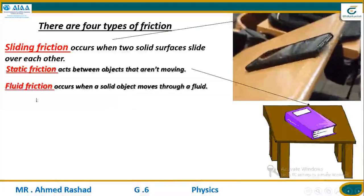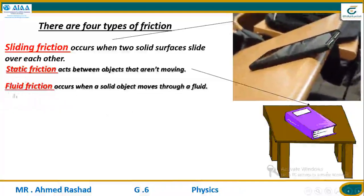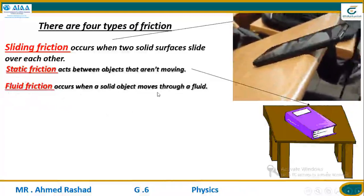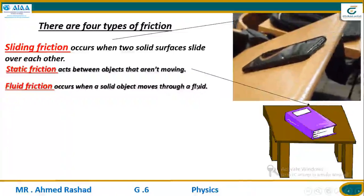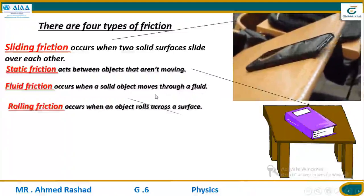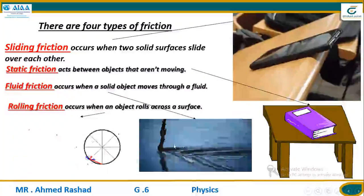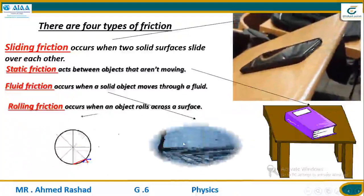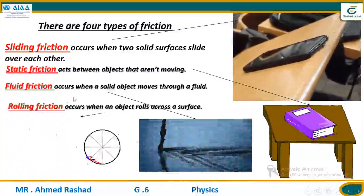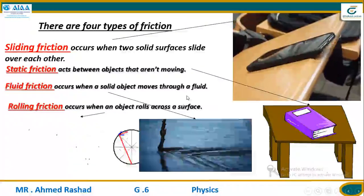Number three: fluid friction. Fluids means liquids. Fluid friction occurs when a solid object moves through a fluid — water or any liquid. The friction that occurs between the object and the water or the surface is called fluid friction. Fluid friction occurs when a solid object moves through a fluid or any liquid.